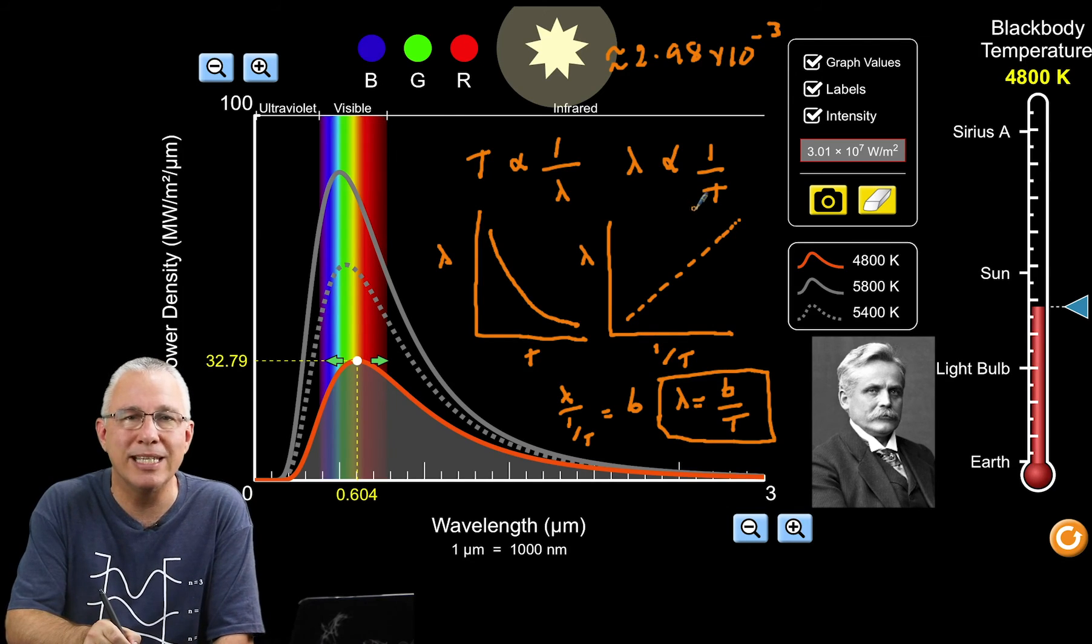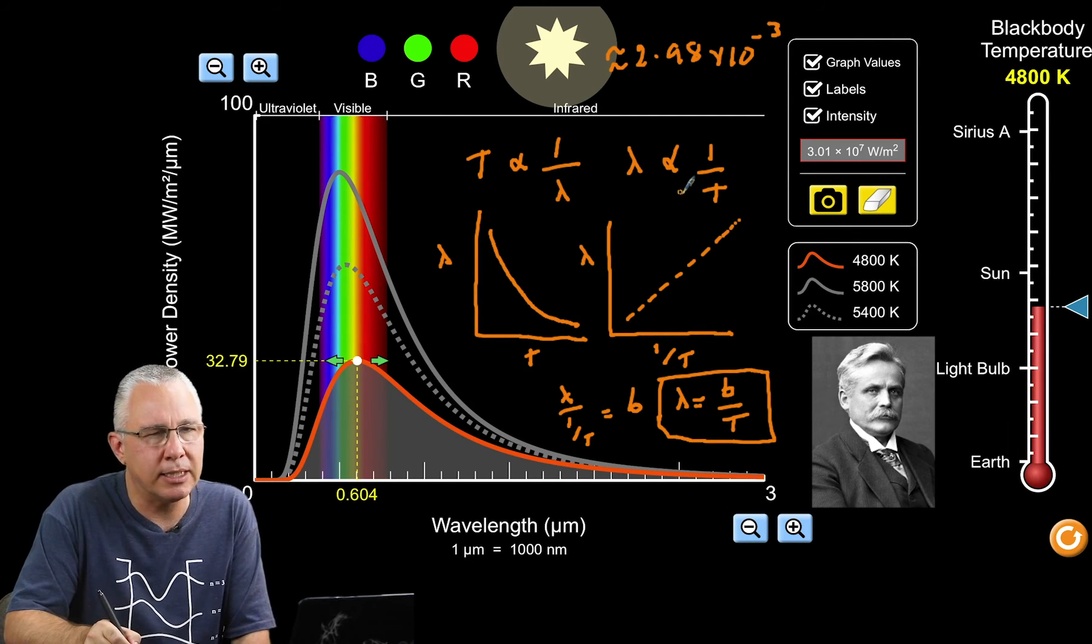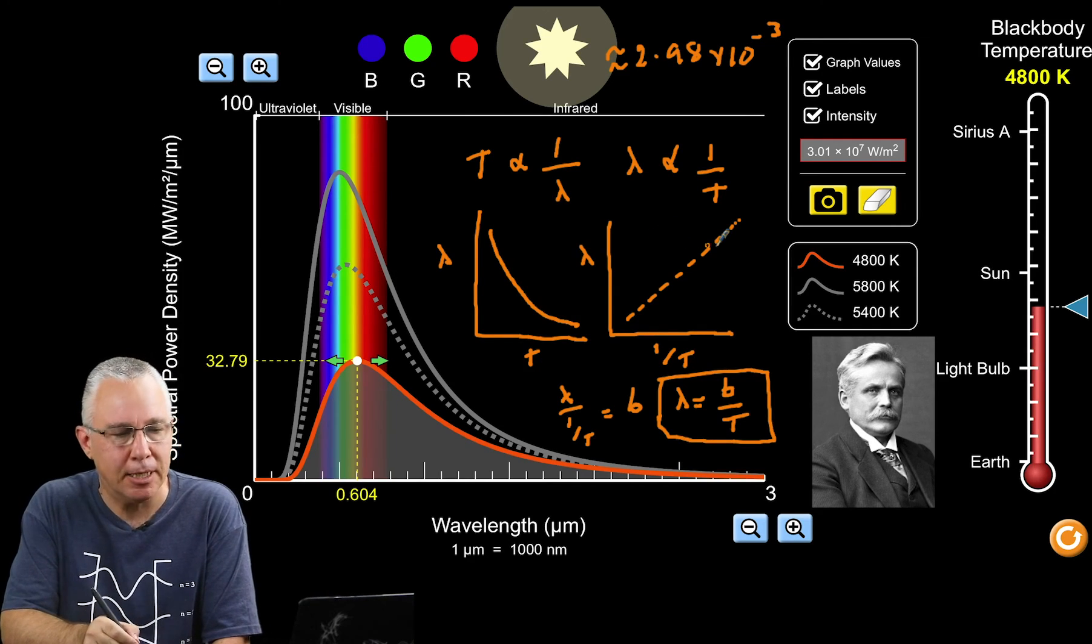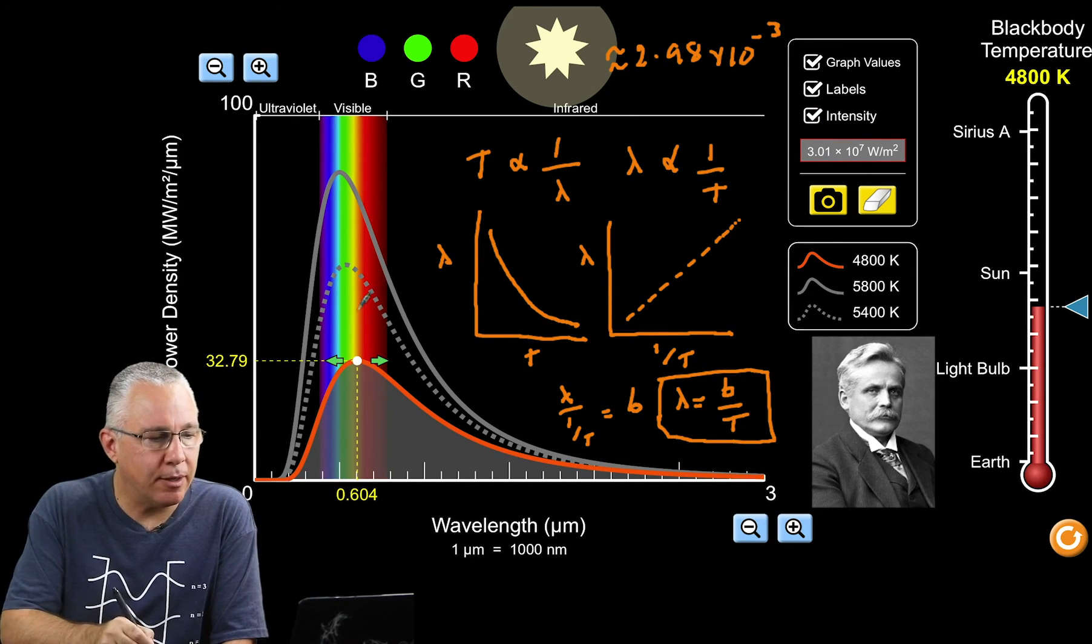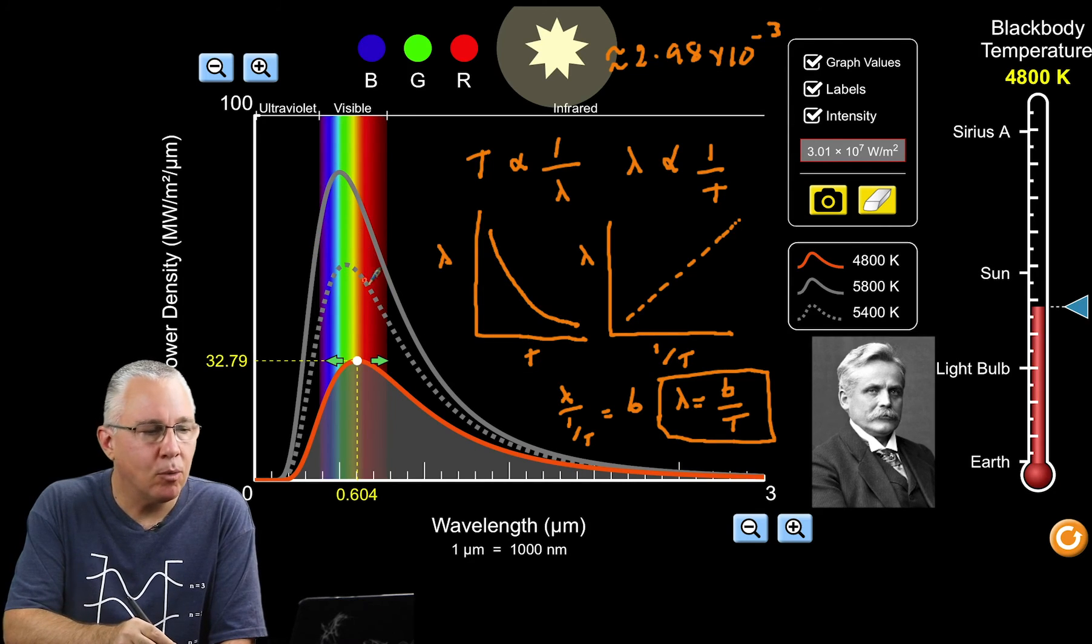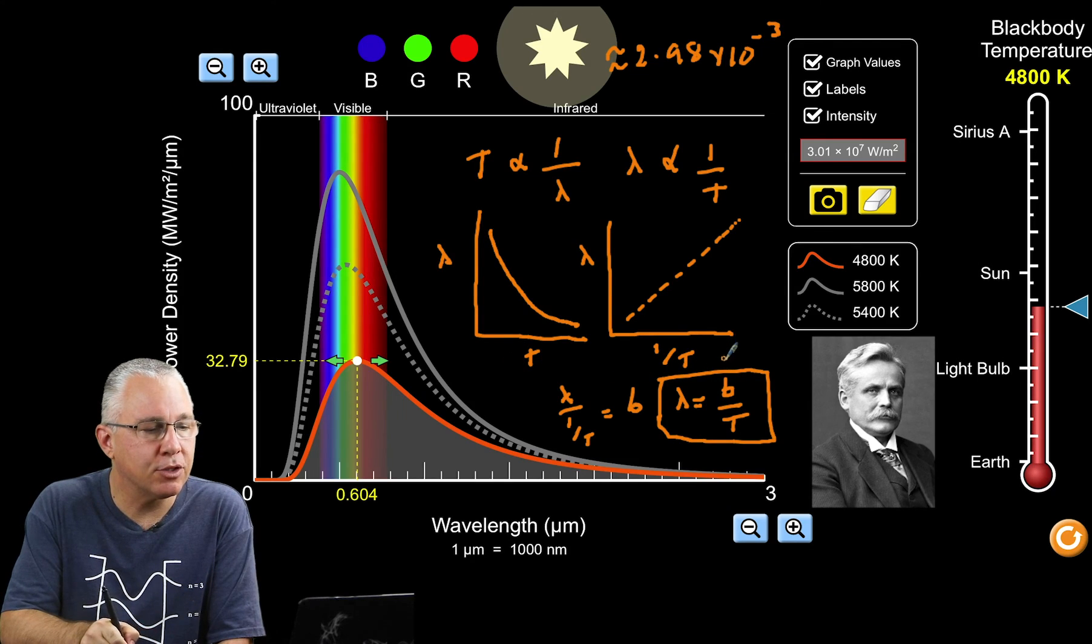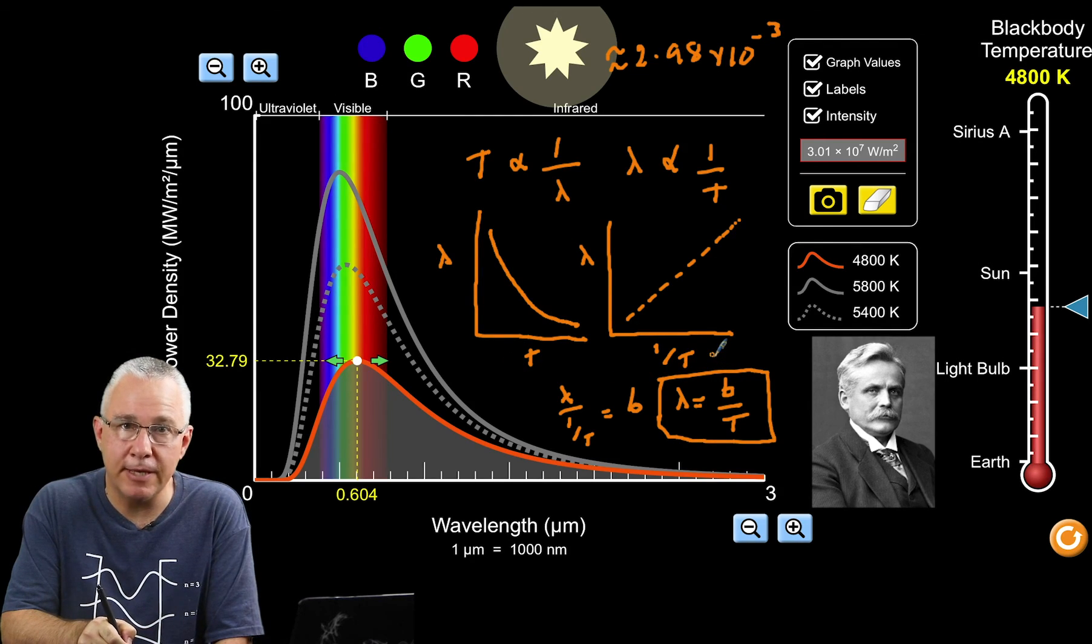Sometimes Wien's Law is called Wien's Displacement Law, so it's basically the same thing. There we have the black body curve, why the curve is very characteristic, that it's related to temperature, and as a result the formula for Wien's Law.